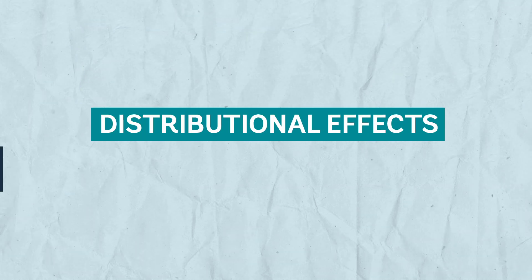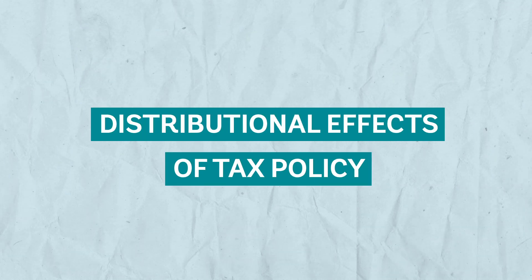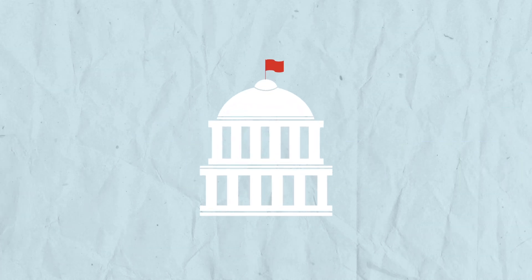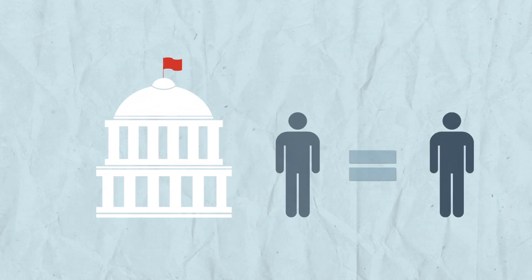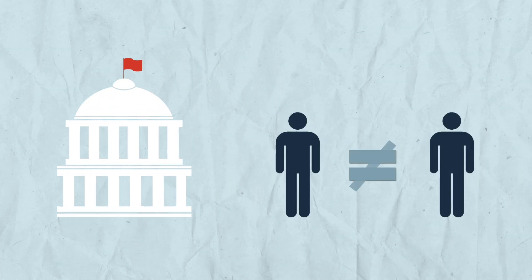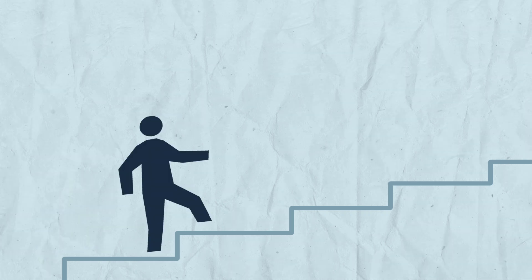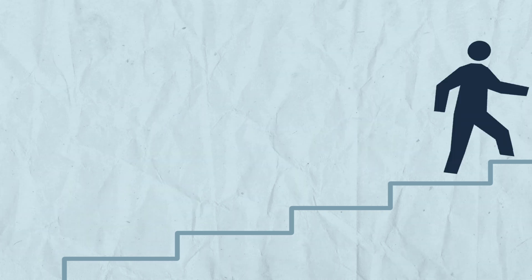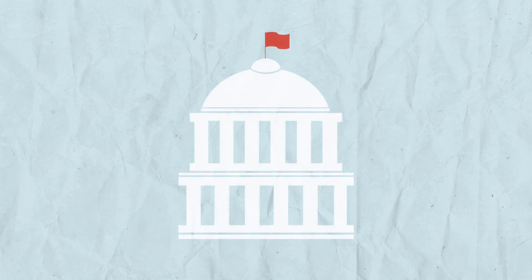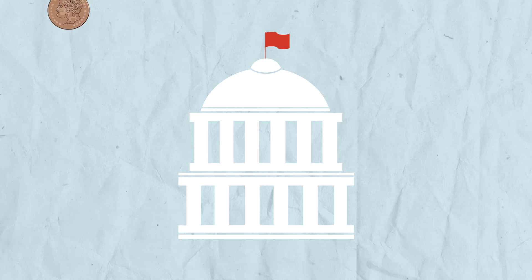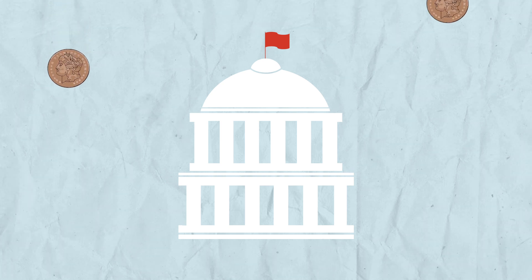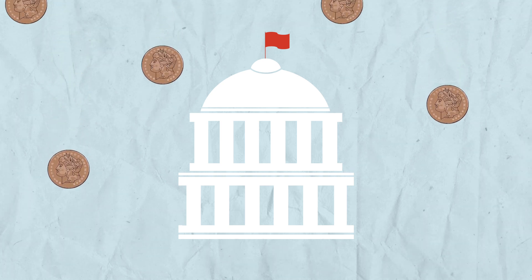What exactly are the distributional effects of tax policy? One of the primary goals of governments is to reduce inequality and move people out of poverty. To achieve this, governments use the revenue that they generate to fund social programs.